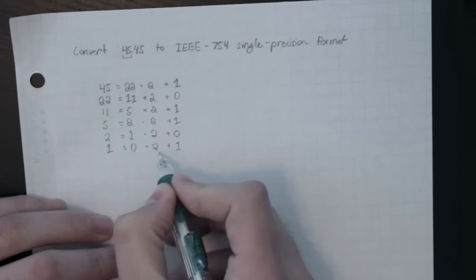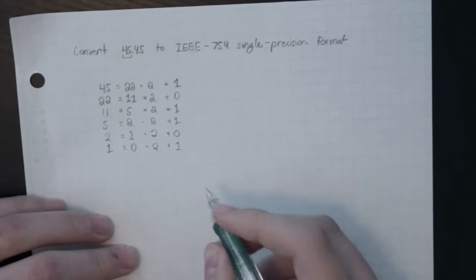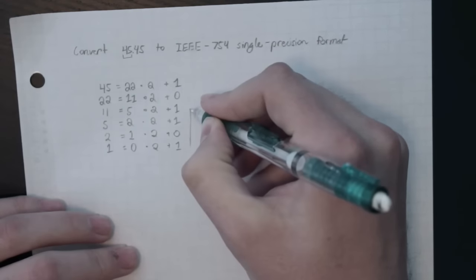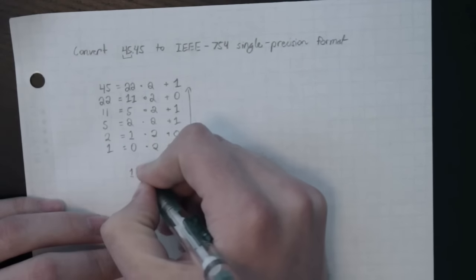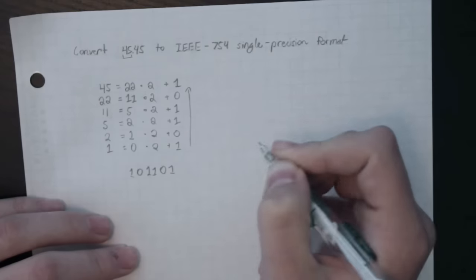So once this value reaches 0, not this one, this will never reach 0, and not this one, then we can go ahead and have our conversion. So this is pretty standard. We're going to read our remainders from bottom to top. So we can write that down. So this is our representation of 45 in binary.